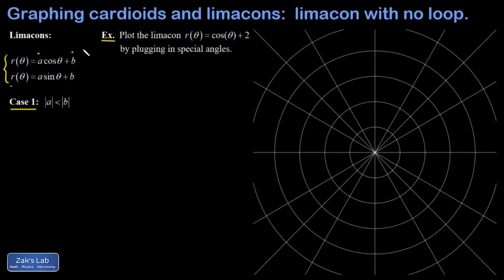Again, the sine version is just a π/2 rotation of the cosine version. In our example we're just going to do a cosine, and the limaçons get divided into two different cases. Case 1 is where |a| < |b|.